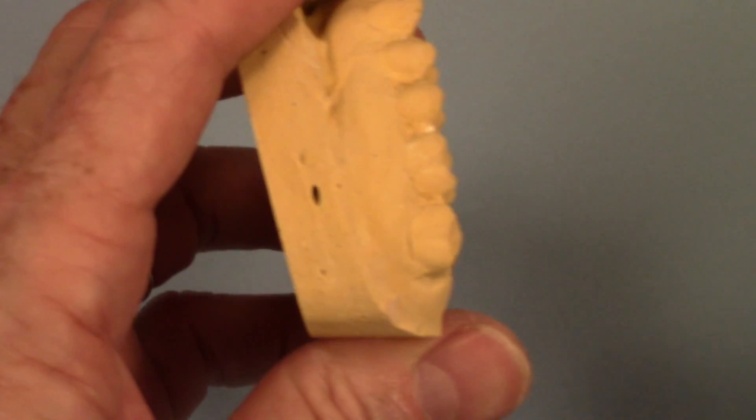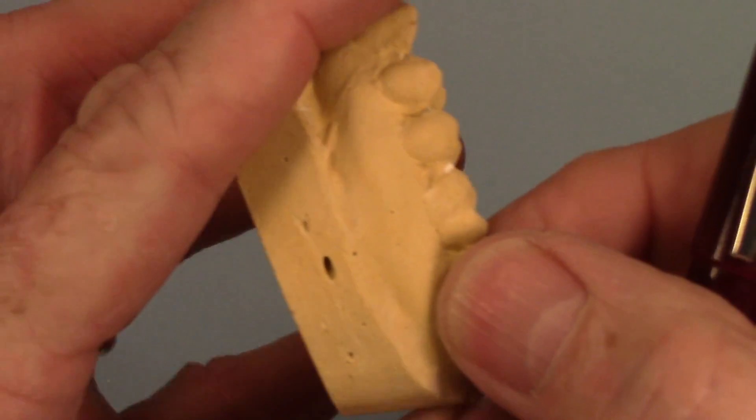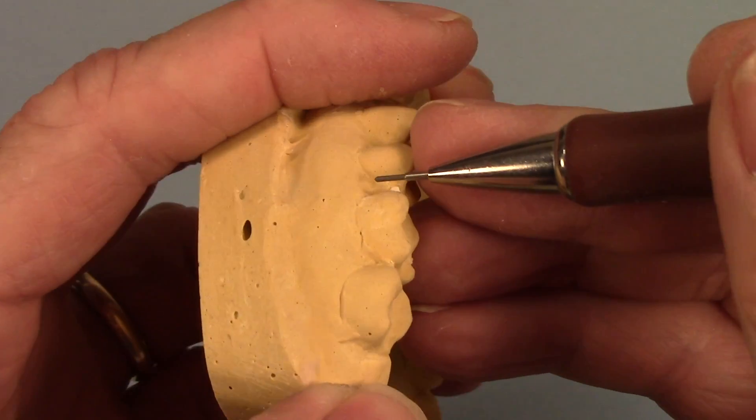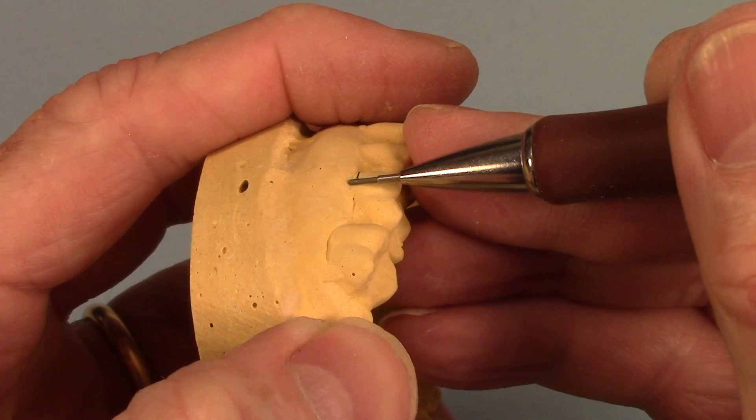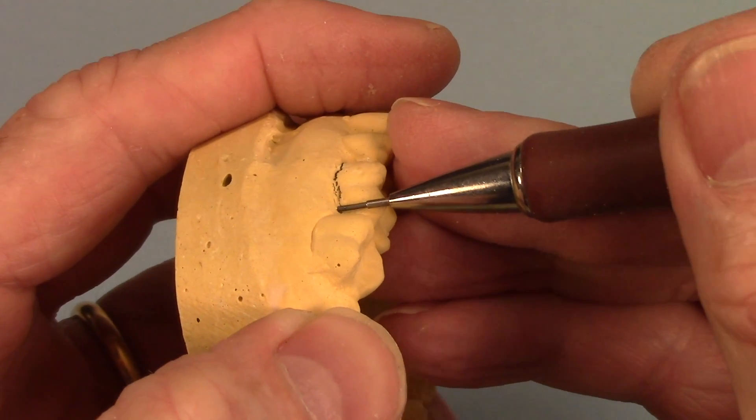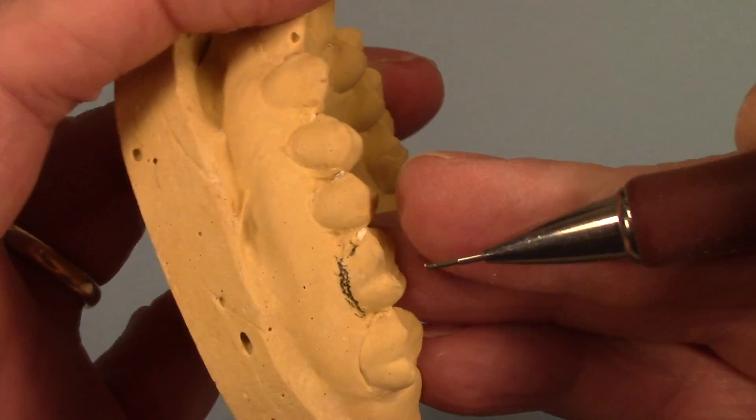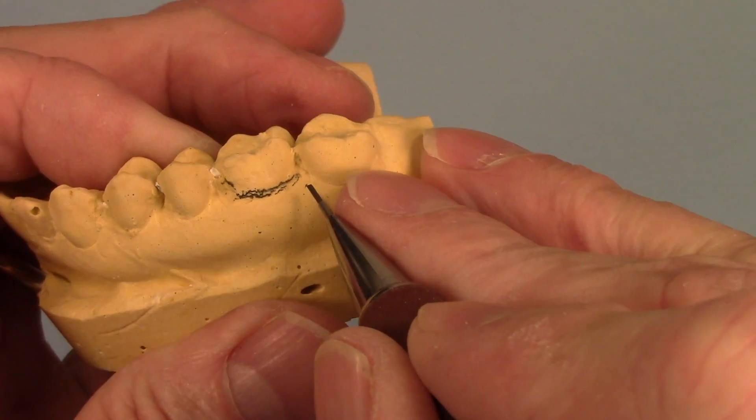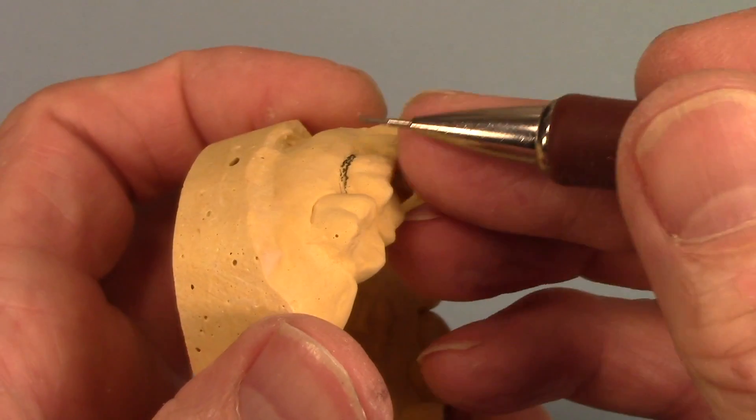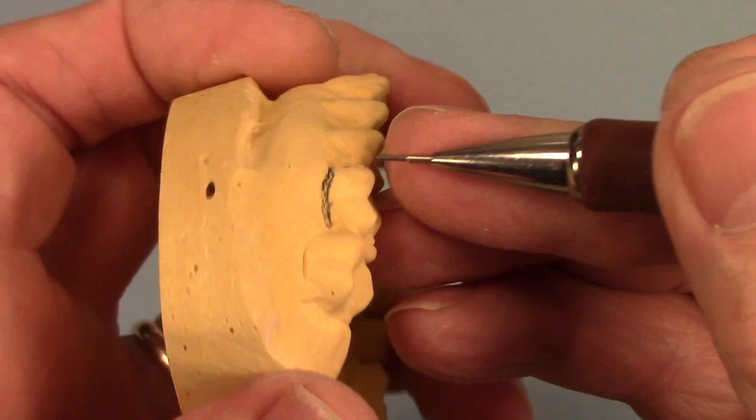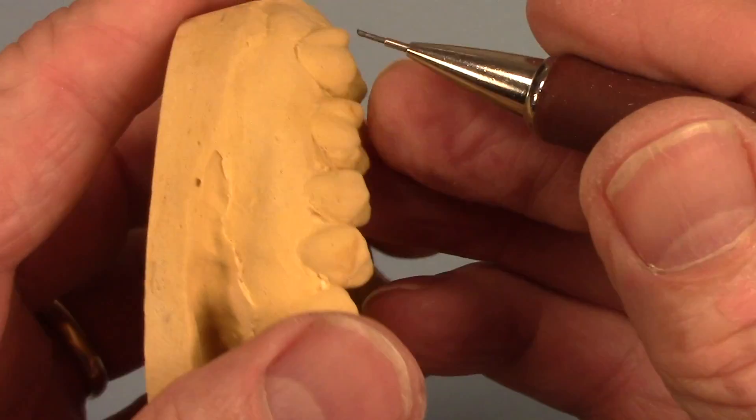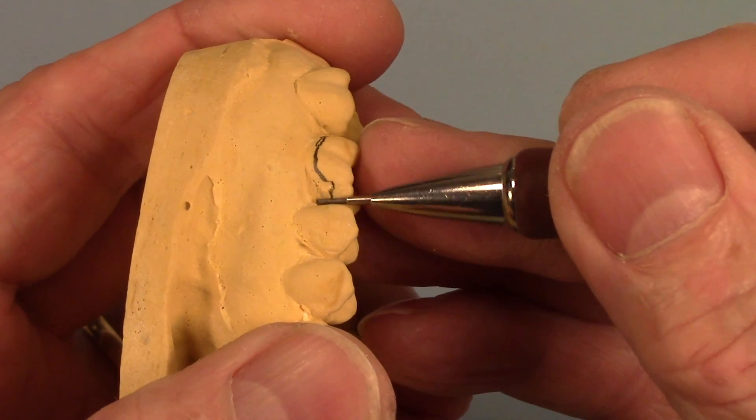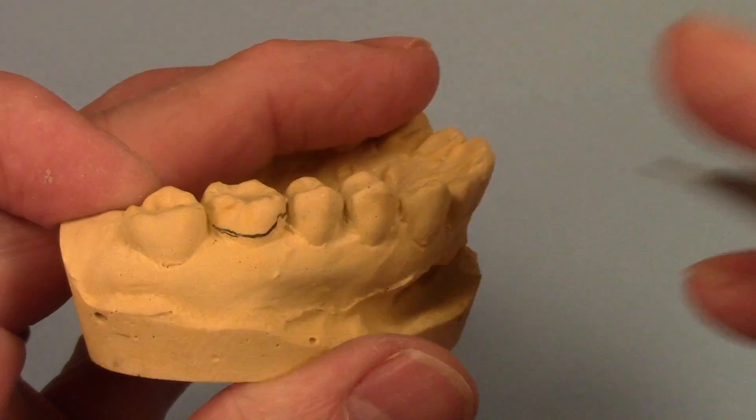Now if we take this model that I've bent this Adams clasp on and we were to survey it, I'm not going to put it on a surveyor but I'm just going to draw a line here, drag my pencil along this, and we're trying to identify where the height of contour might be. Okay so you can see there's going to be some undercut right in here and not much back here but a little bit. Let me just drag that back here a little bit better. Yeah there's not much back there. There's more on the mesial than on the distal. So let's do the same thing on this. Okay so I've got some good undercut there and a little bit back here.